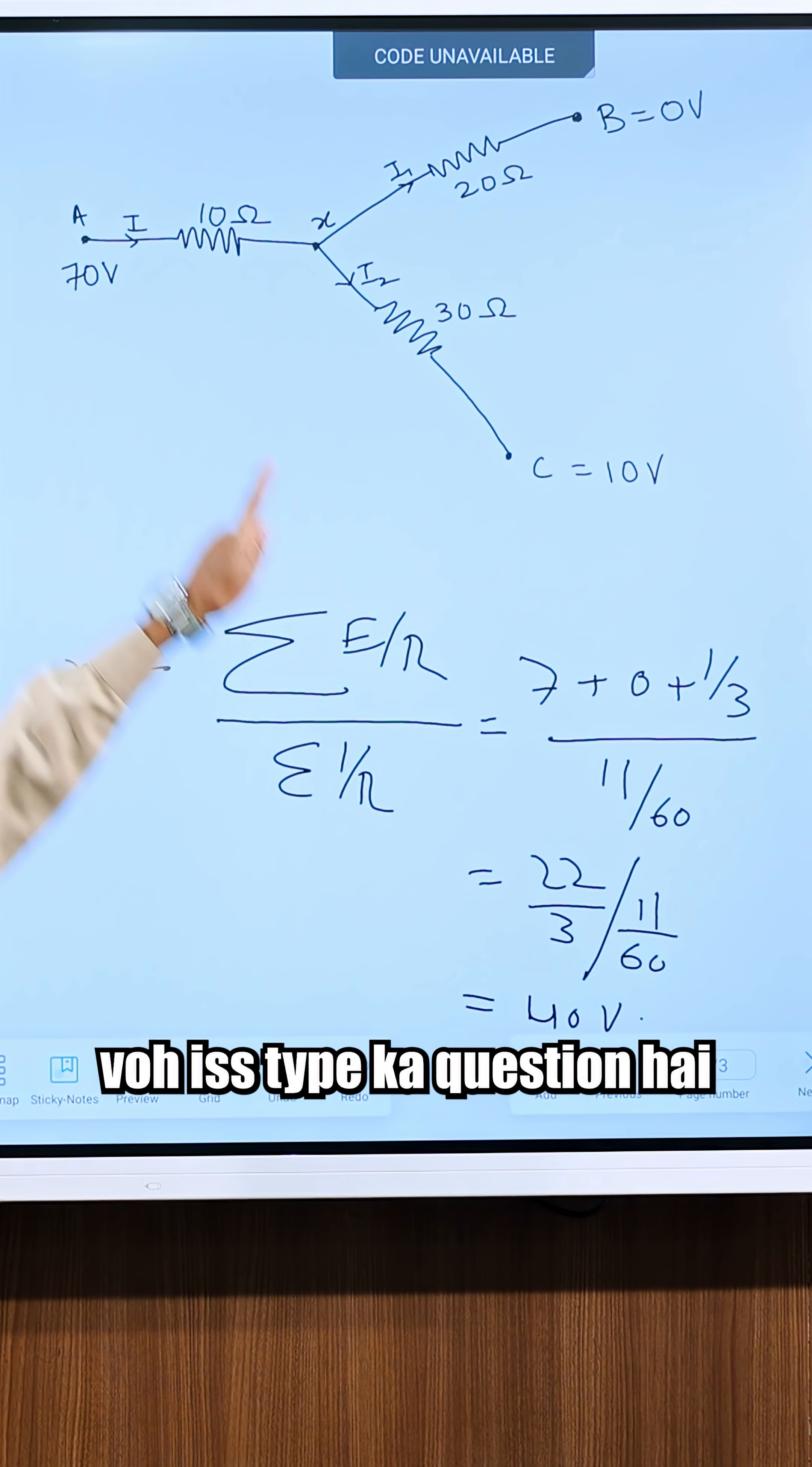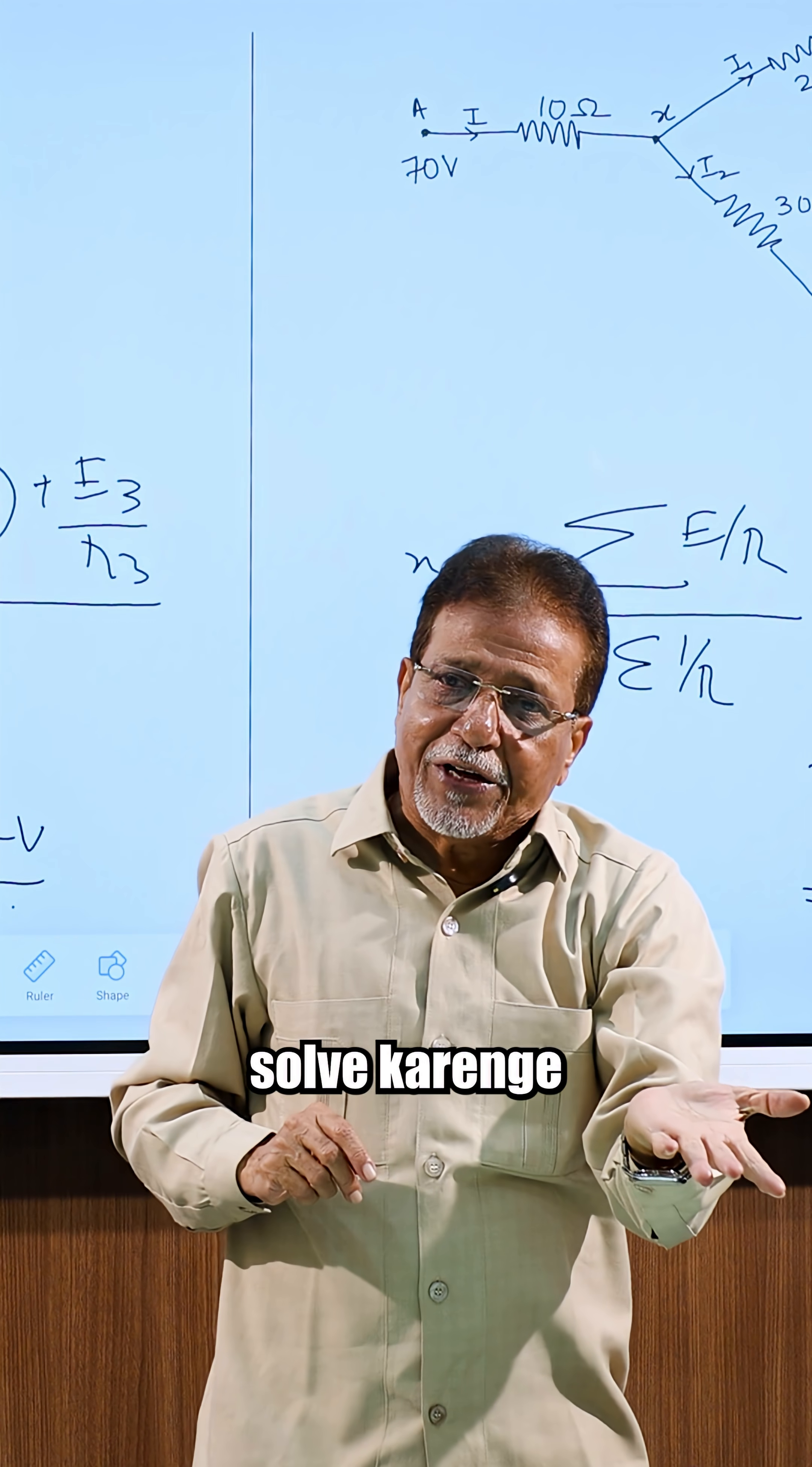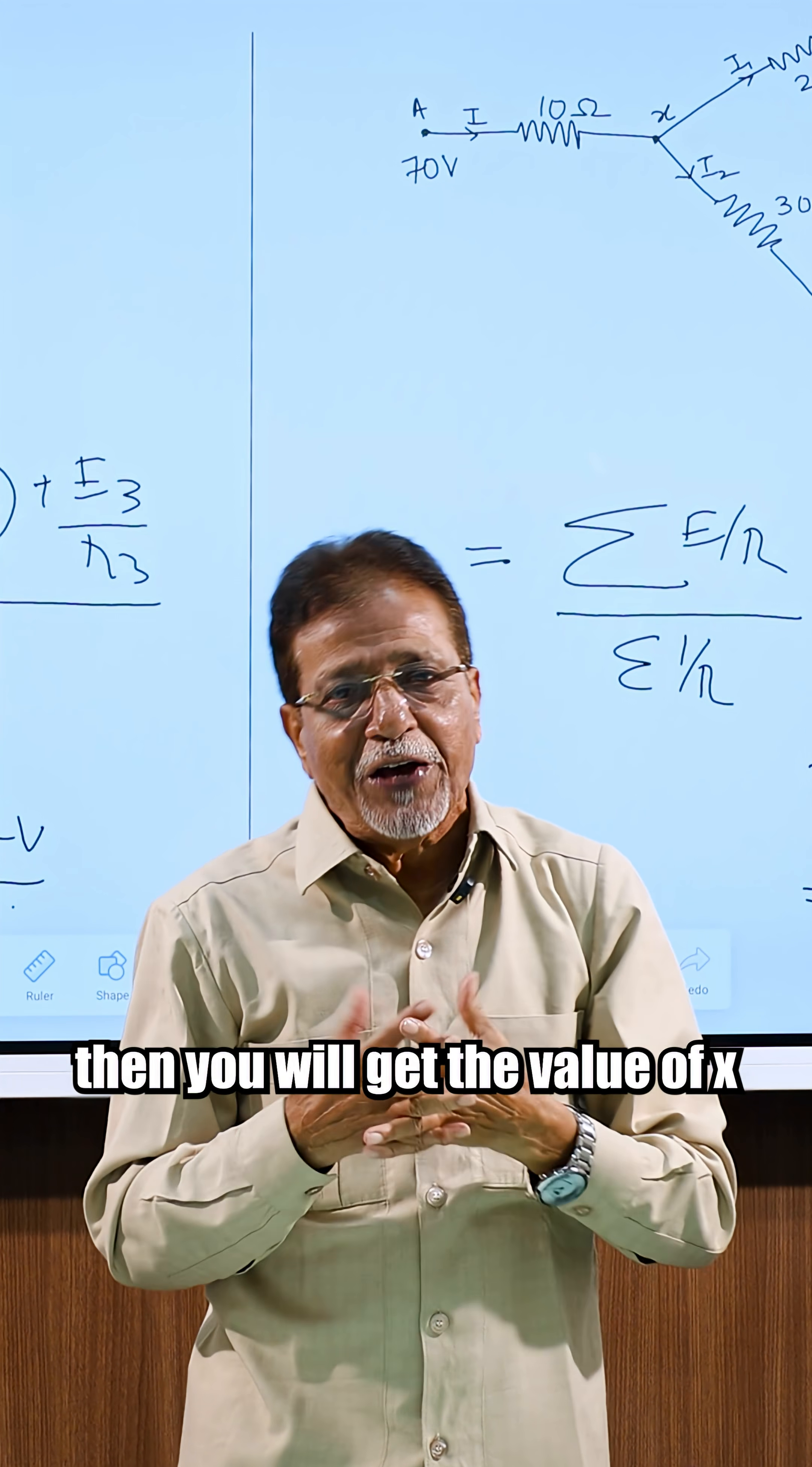You are asking the question, which type of question? I have to find the potential of the junction. I mean, the potential of the junction is x. If you solve the book method, you have to find out i, then you have to find out i1, then you have to find out i2, then you have to apply Kirchhoff's law and then solve it. And then you will get the value of x.